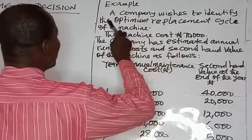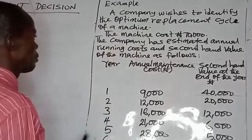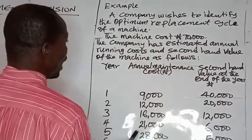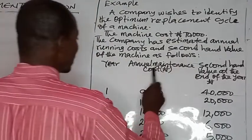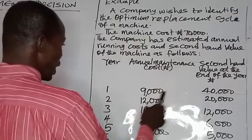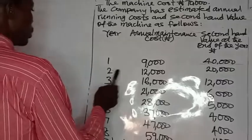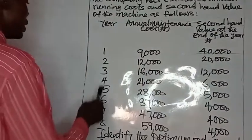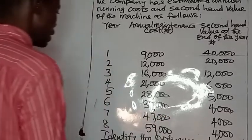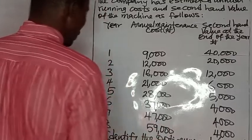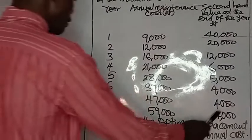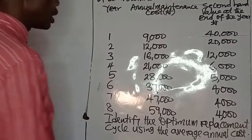Example: A company wishes to identify the optimum replacement cycle of a machine. The machine costs $70,000. The company has estimated annual running costs and second-hand value as follows: Year 1 — maintenance $9,400, second-hand value $40,000. Year 2 — $12,000 and $20,000. Year 3 — $16,000 and $12,000. Year 4 — $21,000 and $6,000. Year 5 — $23,000 and $5,000. Year 6 — $37,000 and $4,000. Year 7 — $47,000 and $4,000. Year 8 — $59,000 and $4,000.